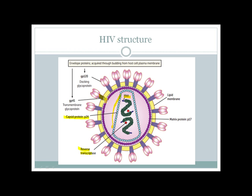In the membrane it has surface glycoproteins: one is a transmembrane glycoprotein called gp41, and another is a docking glycoprotein called gp120. Those are very important proteins which help the HIV virus get inside a cell, and they are also targets for drug treatment. Reverse transcriptase is also a very important drug target against HIV.